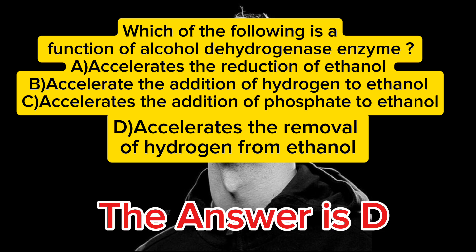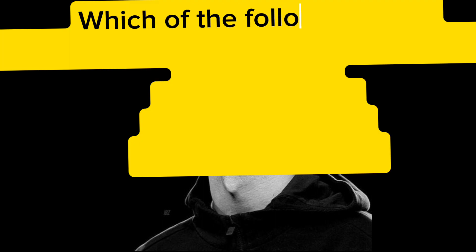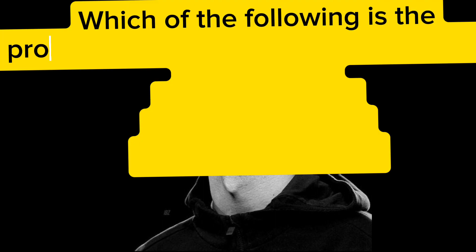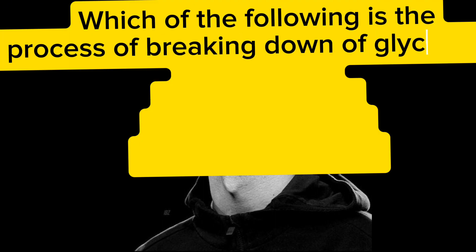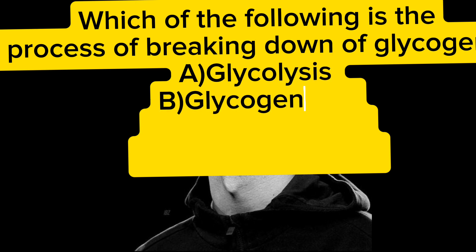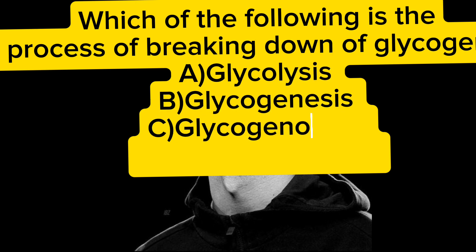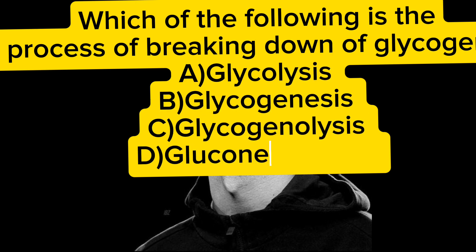Which of the following is the process of breaking down of glycogen? A) glycolysis, B) glycogenesis, C) glycogenolysis, D) gluconeogenesis. The answer is C — glycogenolysis.